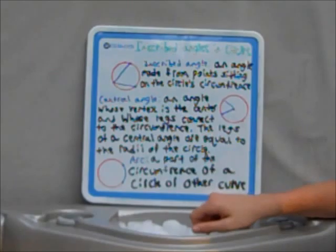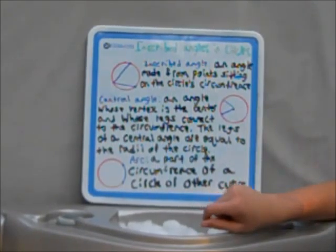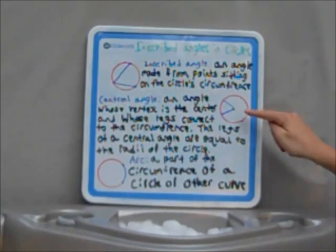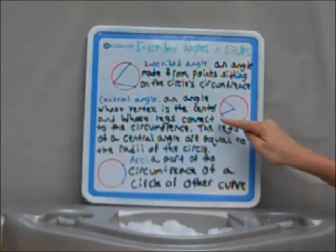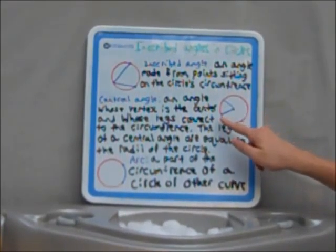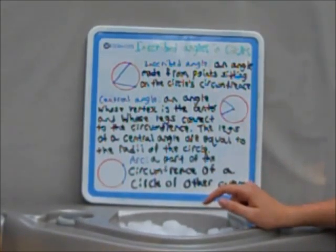The central angle is an angle whose vertex is the center of the circle and whose legs connect to the circumference. The legs of a central angle are equal to the radii of the circle. The central angle is shown here with the vertex at the center and the two other points connecting to the circumference. Since these two points go from the circumference to the center, they are also the radius of the circle.